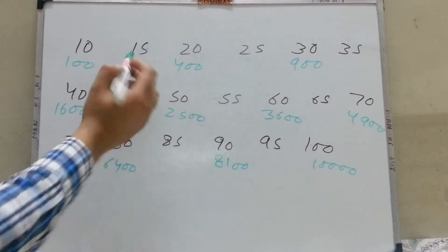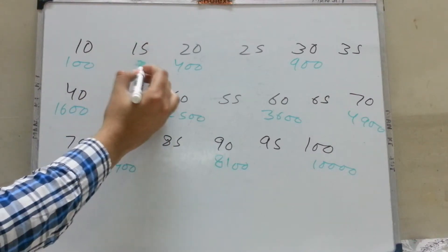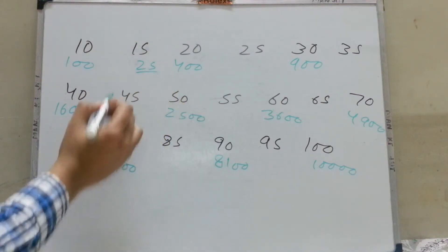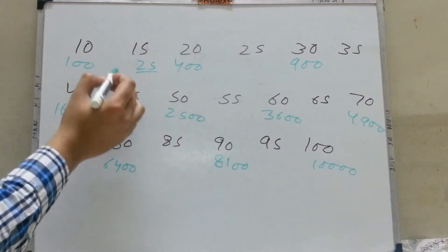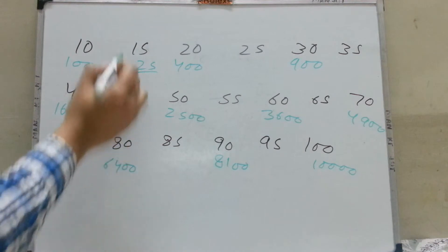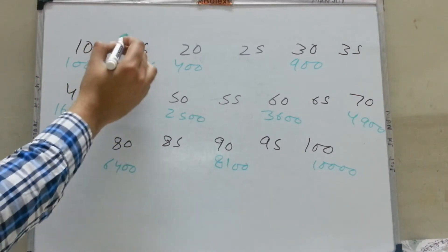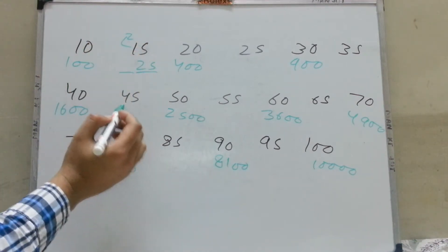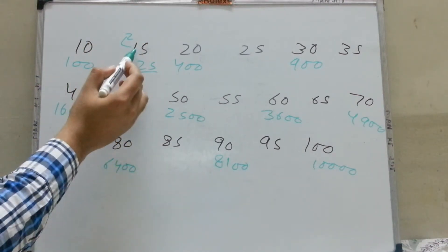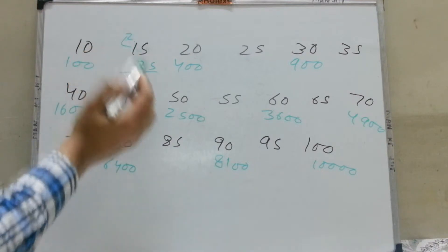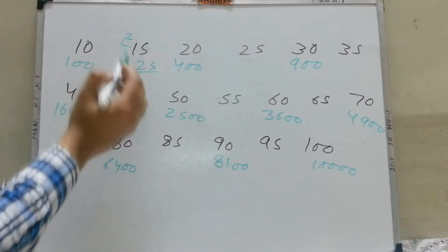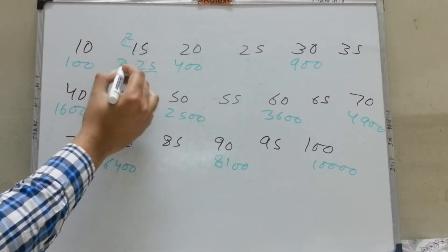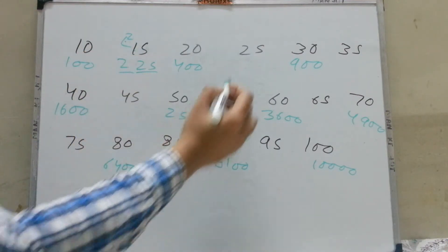The square of 15: your last two digits will always be 25. Your next digits will be found by multiplying 1 with the next digit, which is 2. So 1 times 2 is 2, giving you 225.